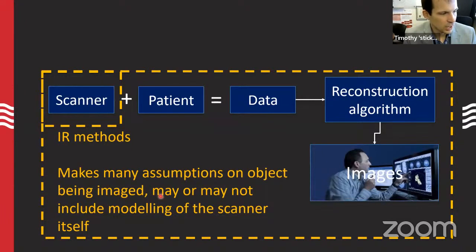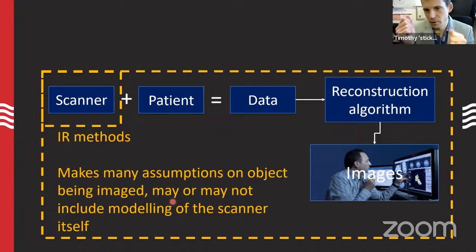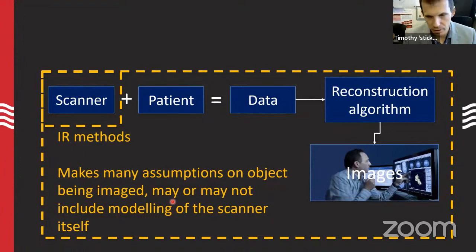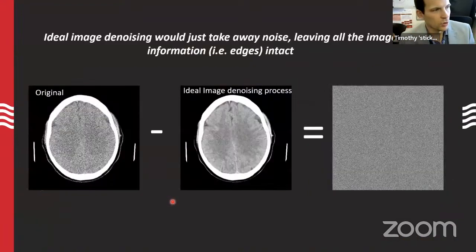The key thing to understand about weird behaviors with iterative reconstruction algorithms is that we're making a lot of assumptions about the object being imaged, which may or may not include modeling of the scanner itself. Some of these assumptions might be: there are no CT number changes greater than 1000 Hounsfield units between adjacent pixels, or that there are flat regions of tissue inside the patient that we can exploit to denoise.